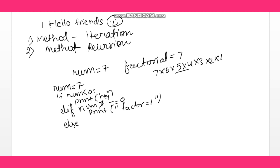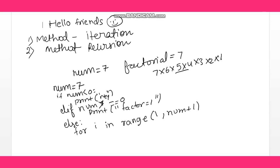Otherwise, we use a for loop: for i in range(1, number + 1). We use number + 1 because the range function excludes the end value, so to include the number itself — for example, 7 — we write number + 1.